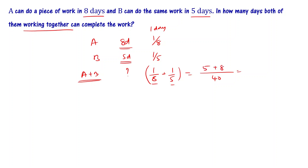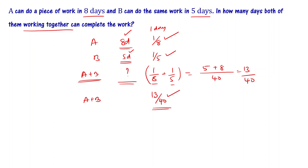So 1/8 + 1/5 = 13/40. This means in 1 day, A and B together can complete 13/40th part of the work. Taking the reciprocal, 13/40 gives the number of days as 40/13 days. So A and B together can complete the work in 40/13 days.